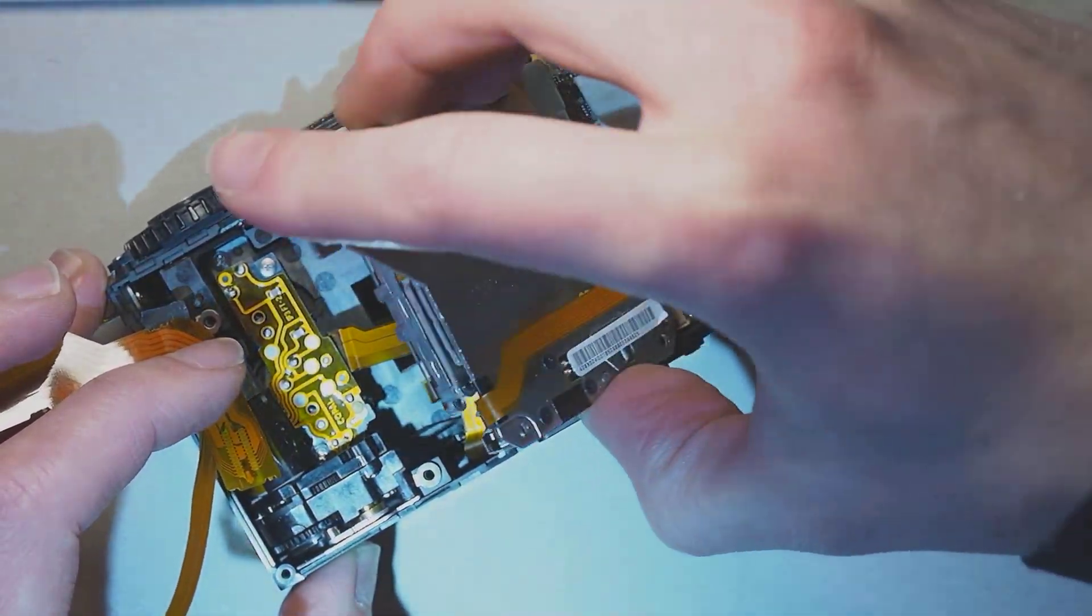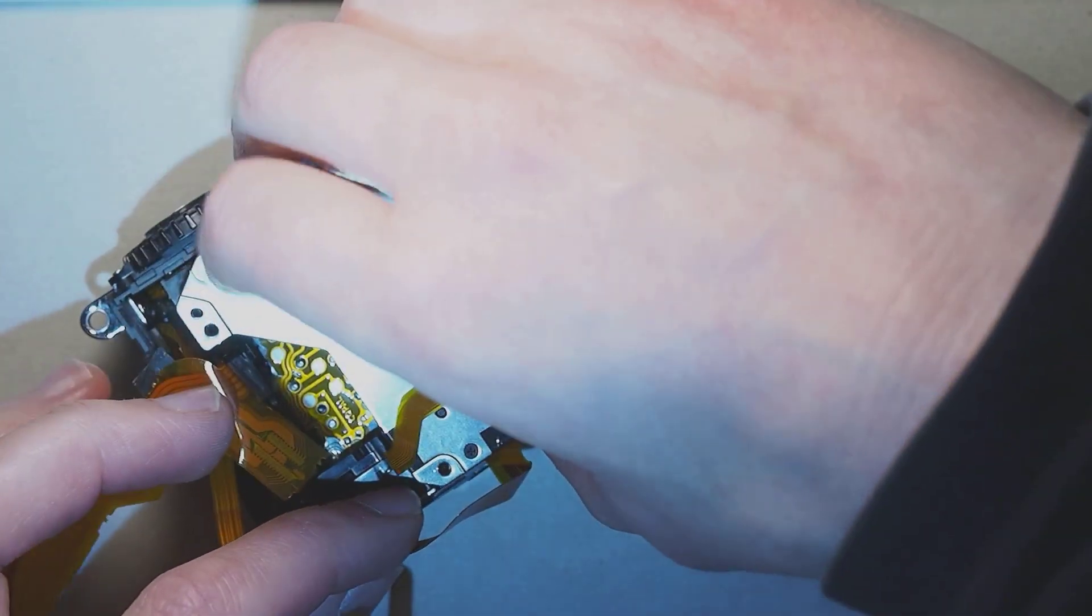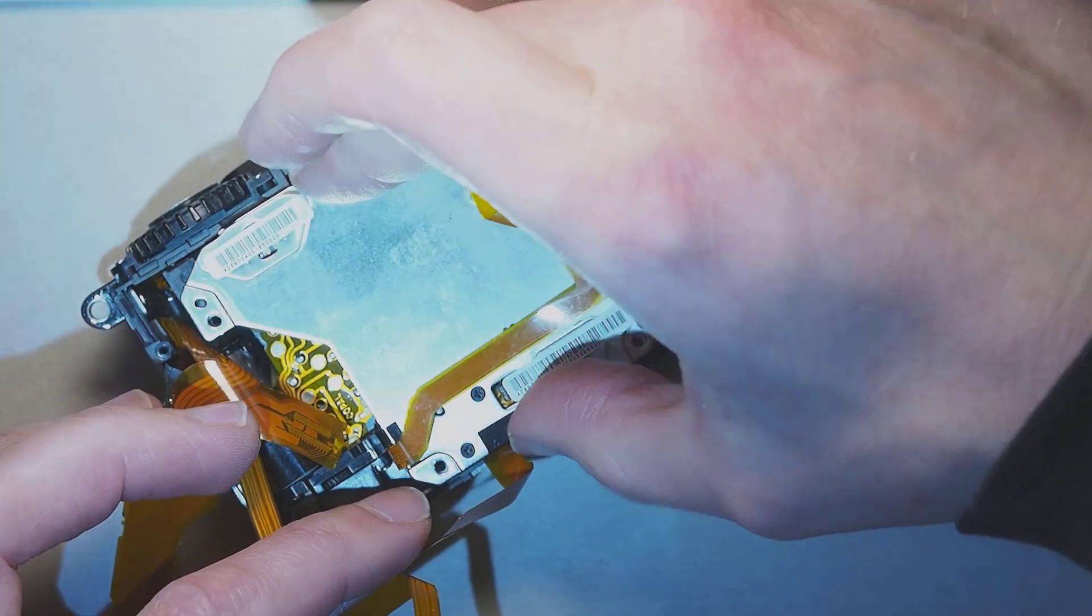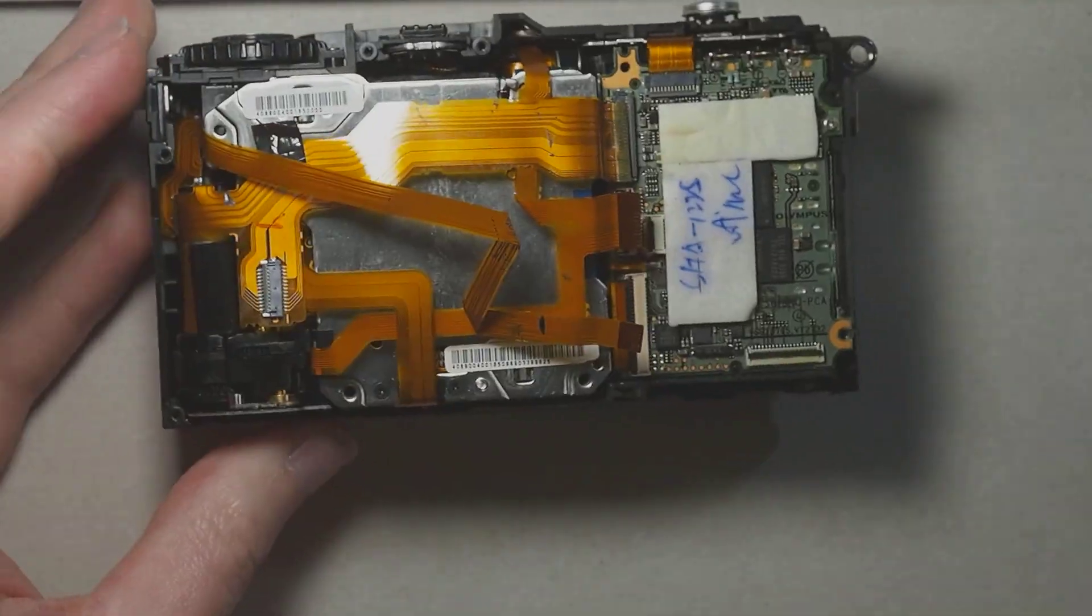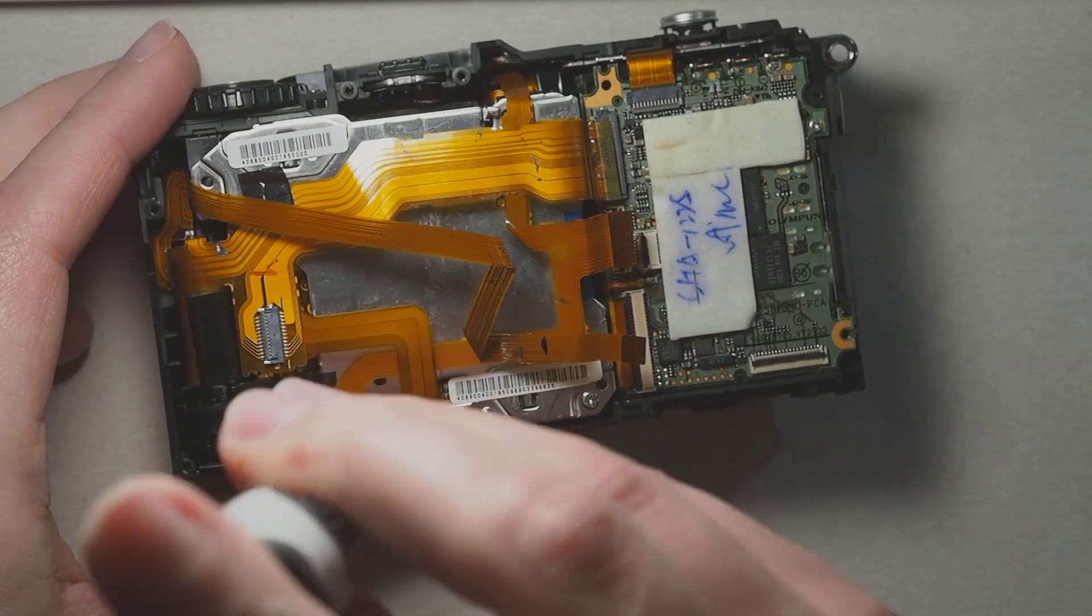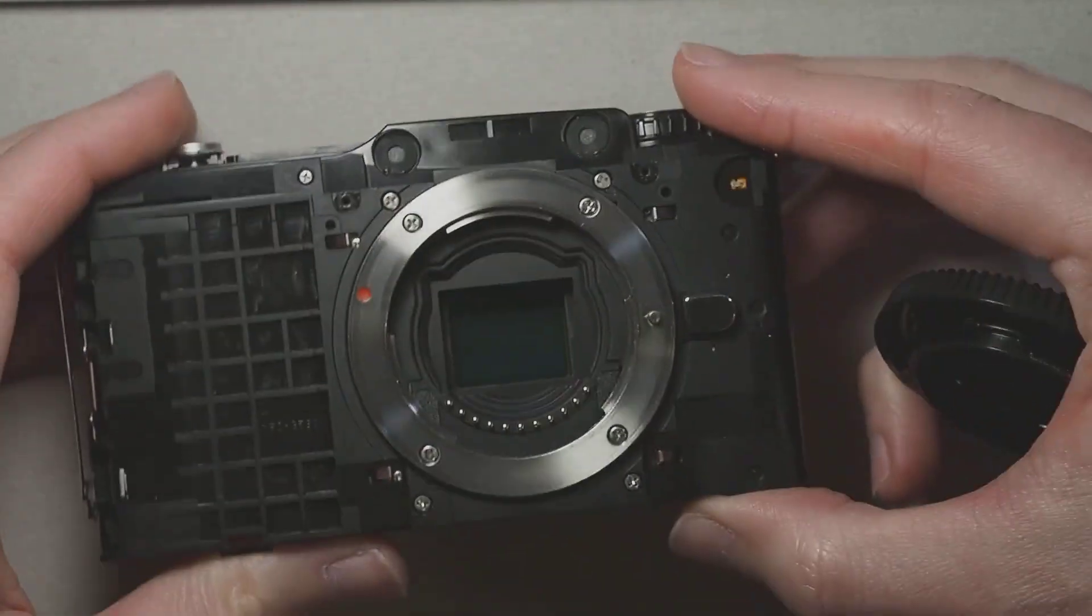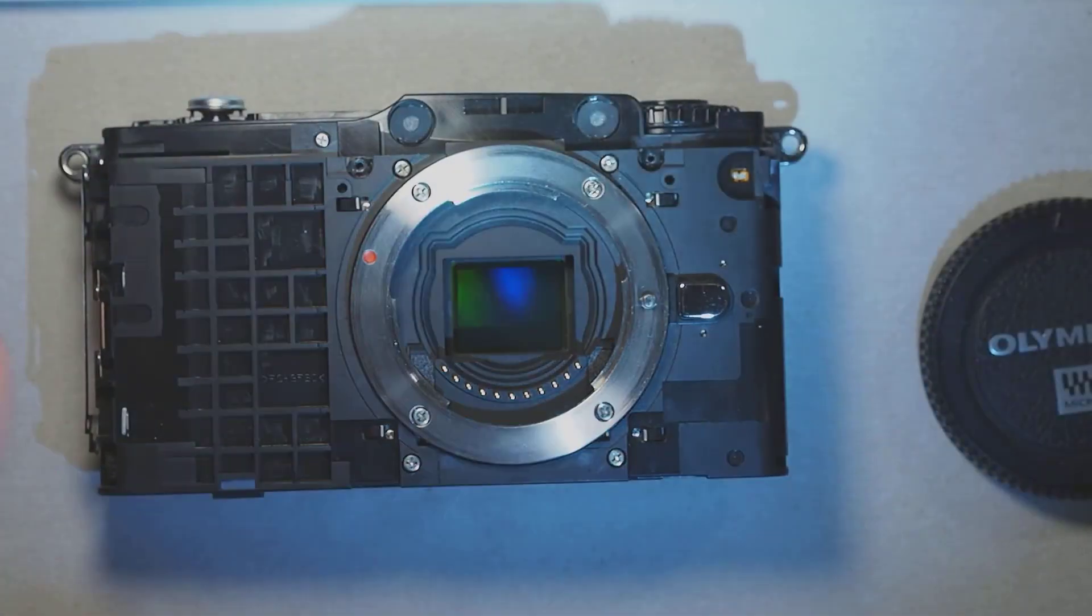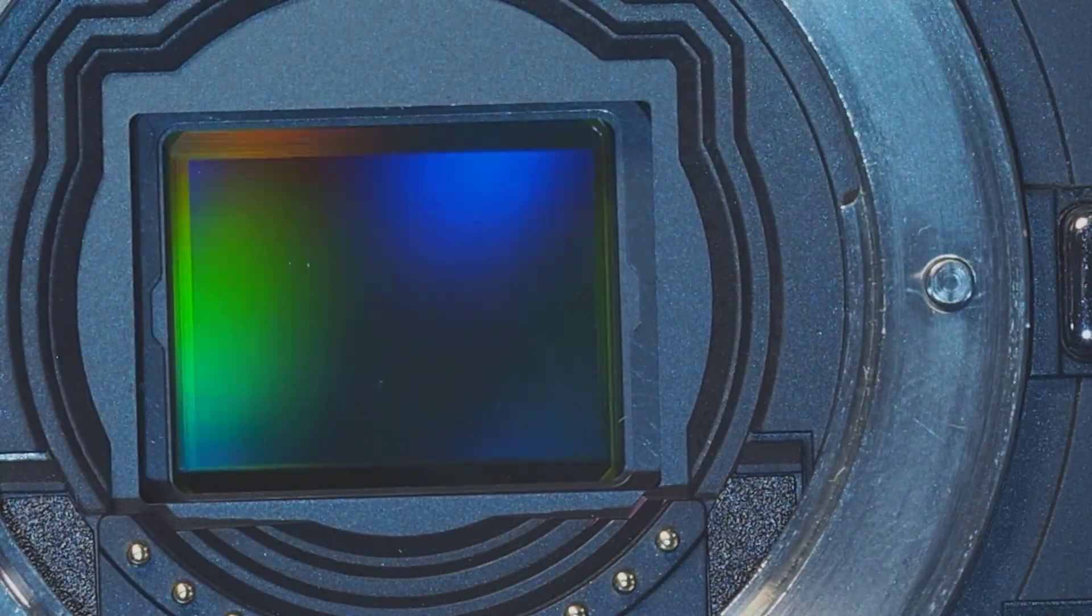Now we can carefully fold the sensor assembly back onto our stacked washers and quickly put in the screws before any of the washers decide otherwise. With the sensor fixed again, let's check if it is really centered now. Yeah, that's better.